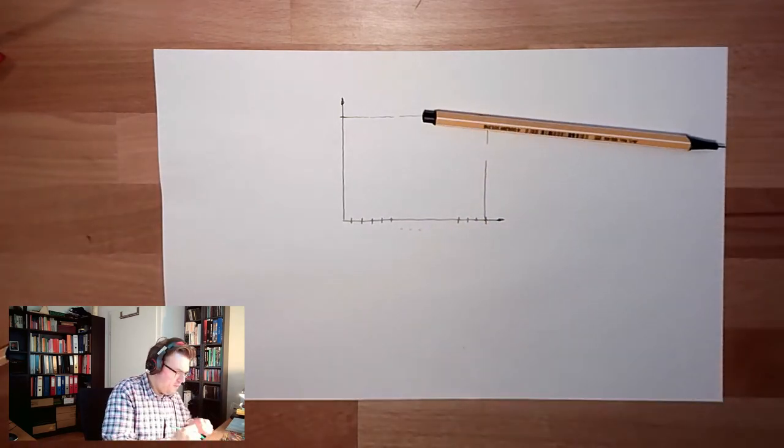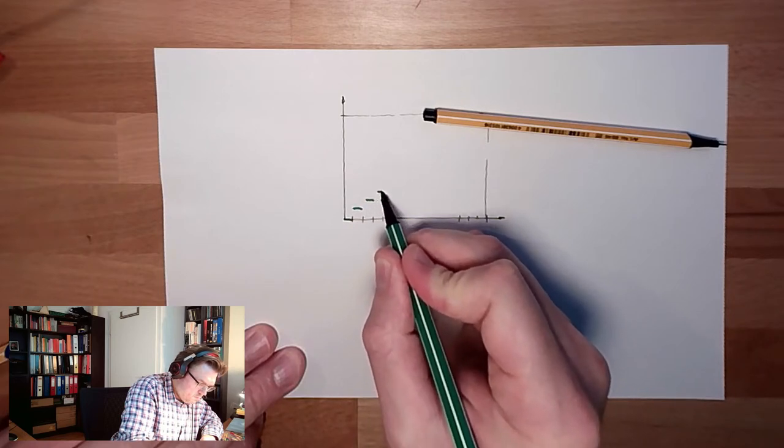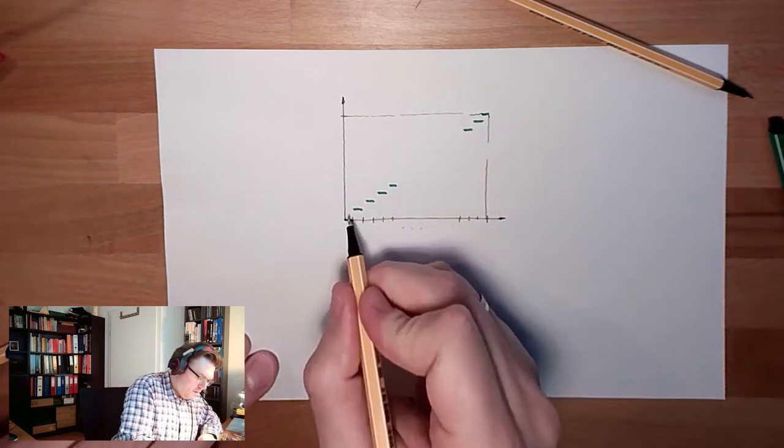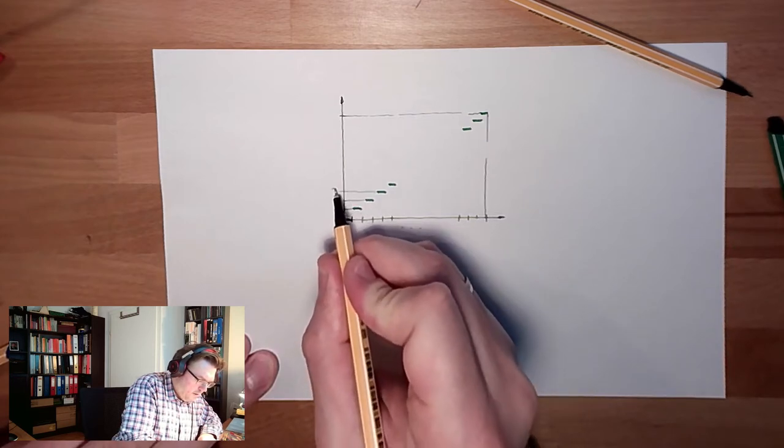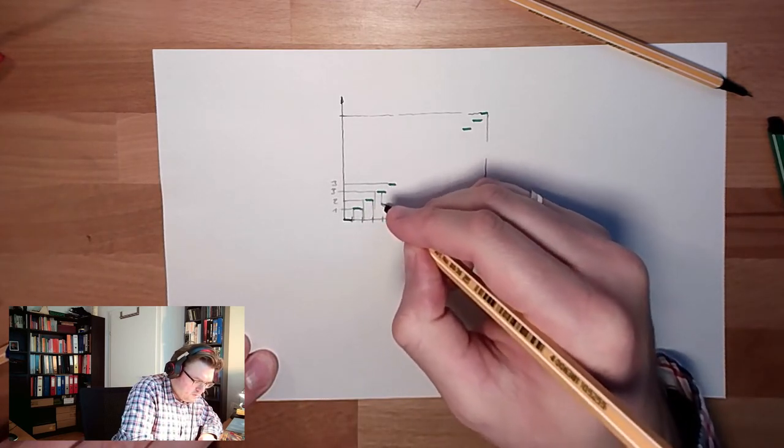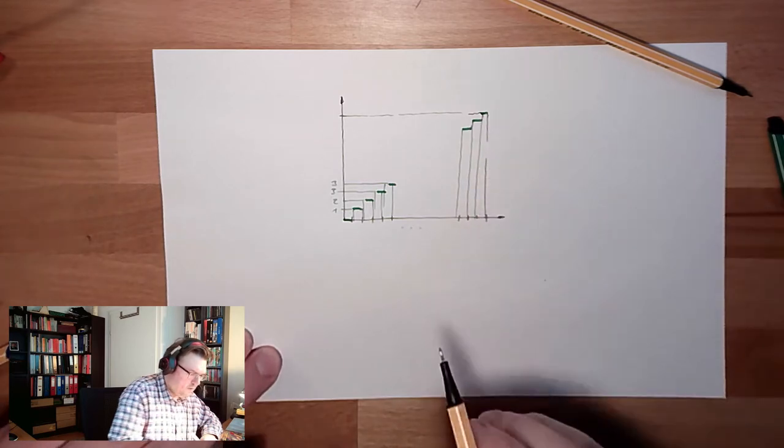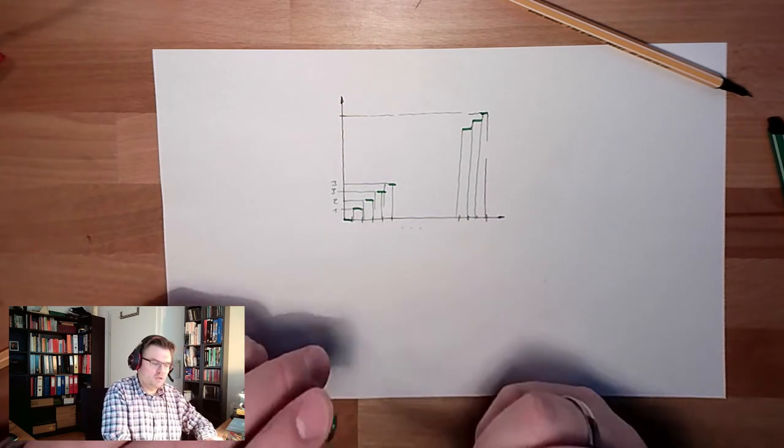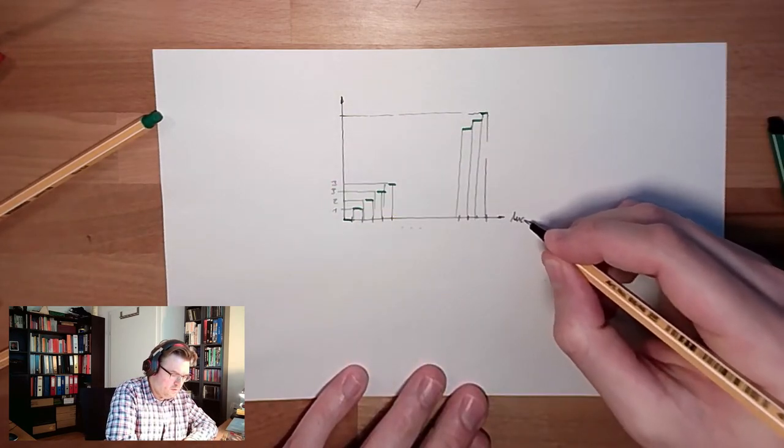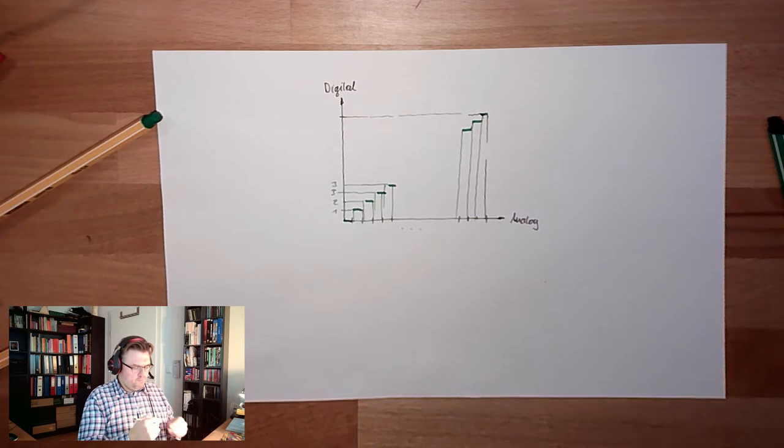And here, I have just steps. This is how this looks like. Here we have one, here we have two, here we have three. It's just numbering those sub-spaces. There's nothing more behind. We measure in which range we have and give this a number. So this is analog here, this is digital.